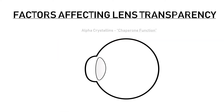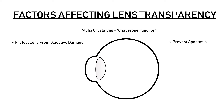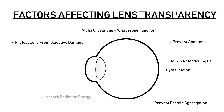Alpha crystallins also have chaperone function — meaning they act as supervisors that take care of others. They prevent the lens from oxidative damage, prevent apoptosis of the cells, prevent protein aggregation, and help in the remodeling of the cytoskeleton. The lens is exposed to light and radiation energy of different wavelengths at all times. Crystallins absorb radiation energy — mainly shortwave visible light, UV light, and infrared radiations — thus protecting the lens enzymes present in the internal layers from radiation-induced damage.